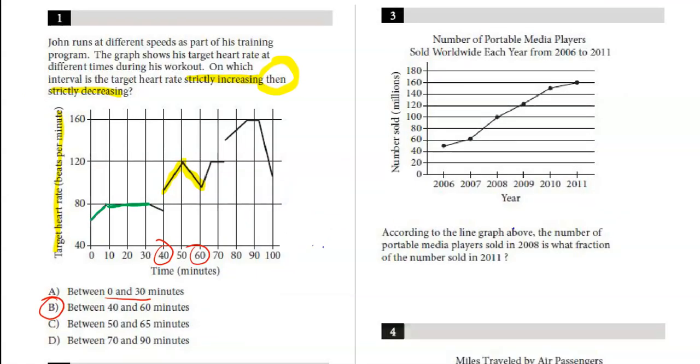Number three, we have a graph here of media players. This question says according to the line above, the number of portable media players sold in 2008, so that would be right here in the graph which looks like it's about 100, is what fraction of the number sold in 2011, which appears to be 160?